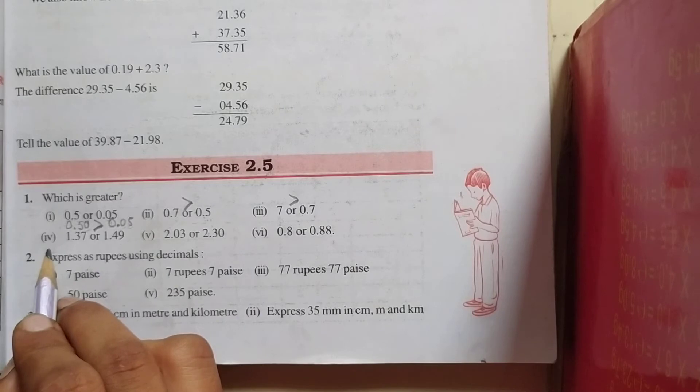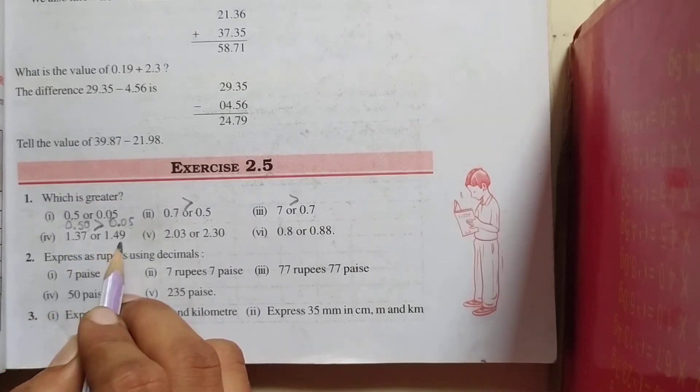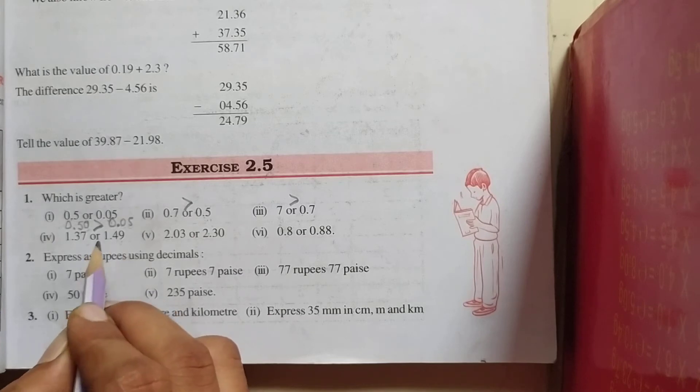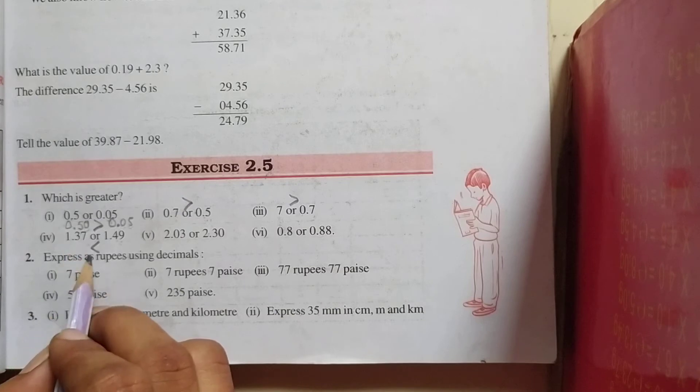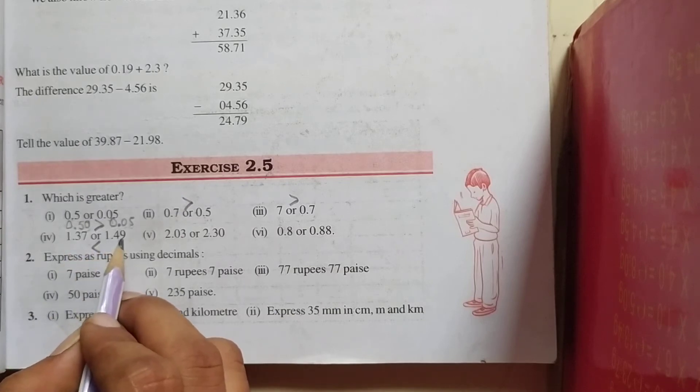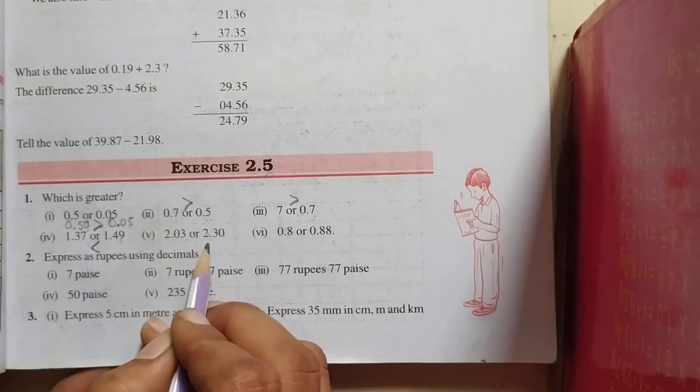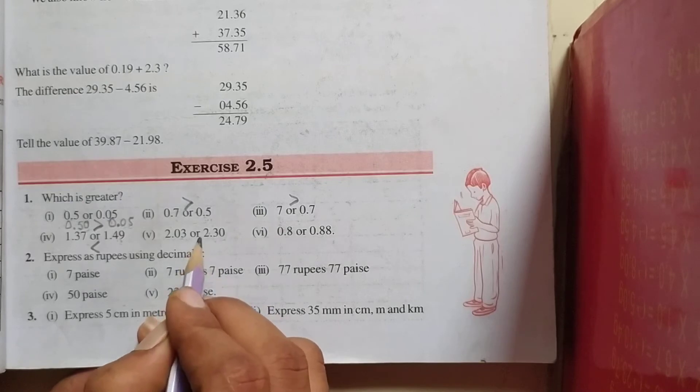Now, fourth one, 1.37 or 1.49. So which one is greater? This one. So here will be less than. 1.37 less than 1.49. Now, fifth, 2.03 and 2.30. Two decimal places are there. So, of course, 2.30 is greater. So here is less than.